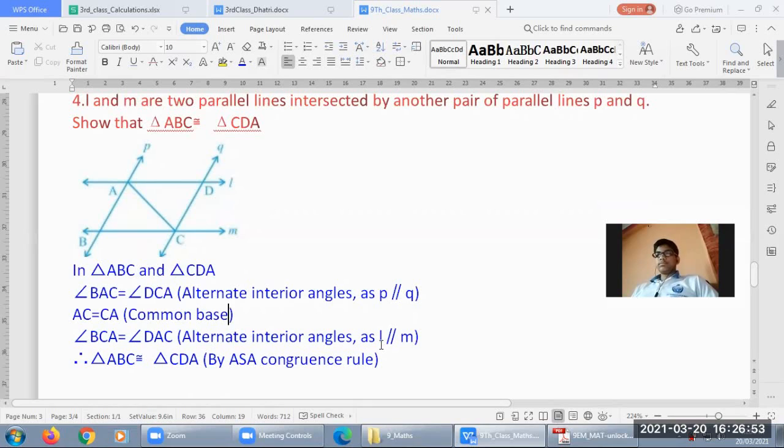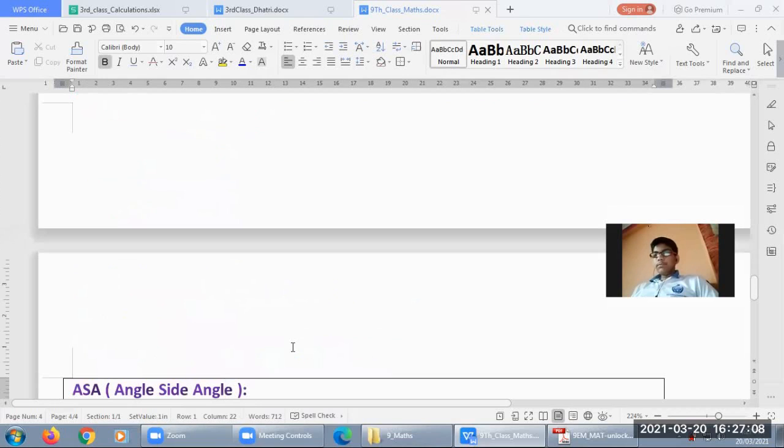Then AC equal - a side equal - so two triangles are congruent by the congruence rule, yes.